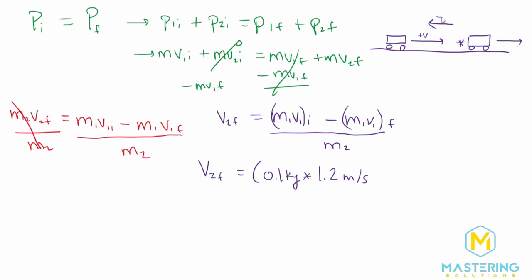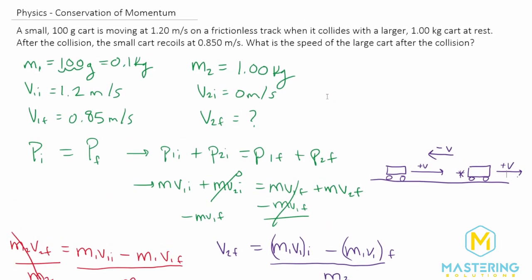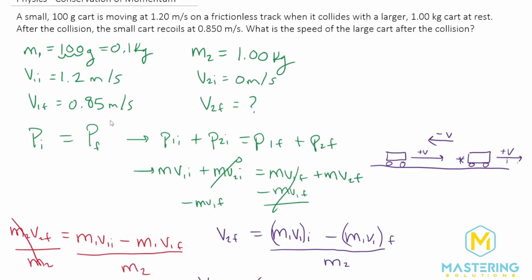After it recoils, it's going to be a negative velocity. And then the second cart's final velocity will be in the positive velocity direction as well. So if we come back up to the top here, we can change the final velocity. This obviously is going to be a negative 0.85 meters per second.